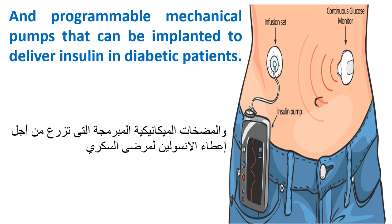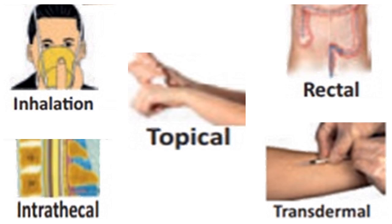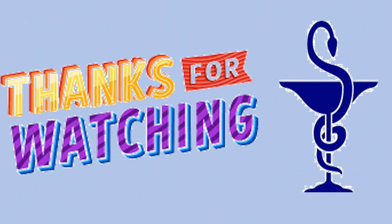Other examples of drugs given via subcutaneous administration include solids such as a single rod containing the contraceptive etonogestrel that is implanted for long-term activity, and programmable mechanical pumps that can be implemented to deliver insulin in diabetic patients. In the next video, we're going to talk about the other routes of drug administration.